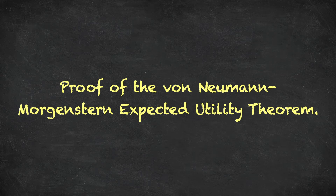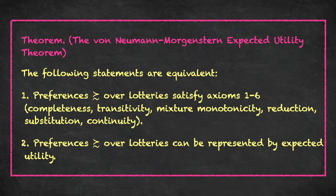In this video, we're now ready to prove the von Neumann-Morgenstern expected utility theorem. Let's remember what this says: the following statements are equivalent — it's an if and only if statement. Statement one holds that preferences over lotteries satisfy axioms one through six: completeness, transitivity, mixture monotonicity, reduction, substitution, and continuity. This is true if and only if the second statement is true: preferences over lotteries can be represented by expected utility.